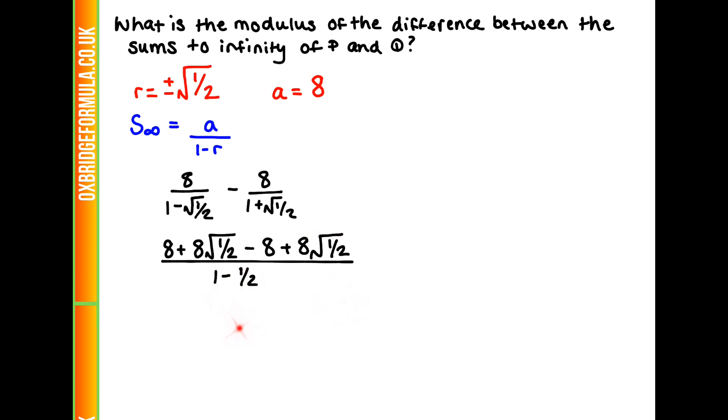We can simplify that down. If the 8s cancel out, we're adding these two together. That's going to be 16 root of a half over a half, or 32 times root of a half.